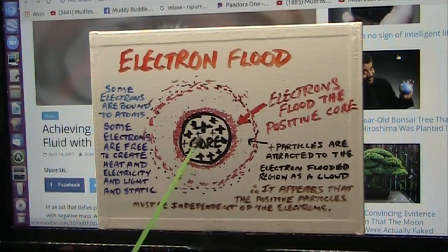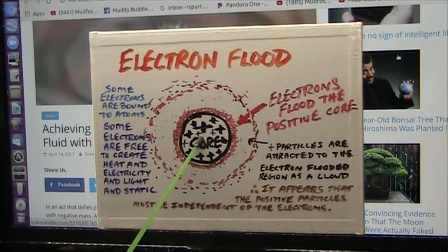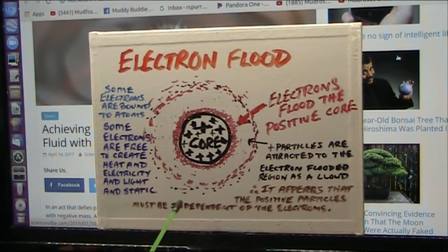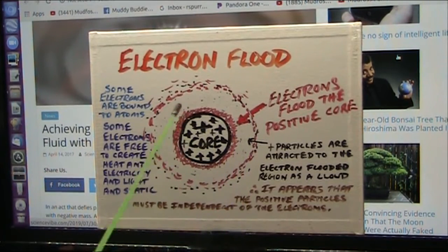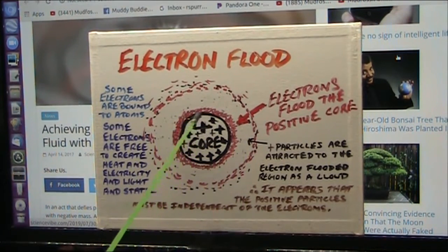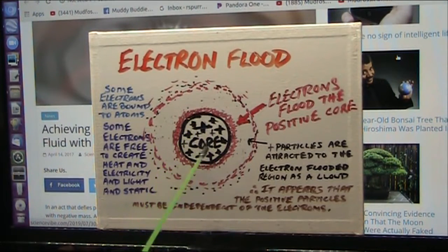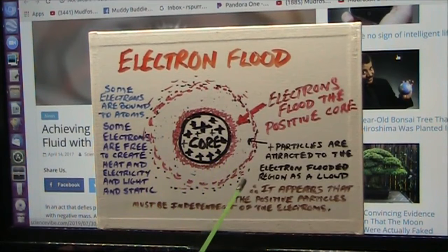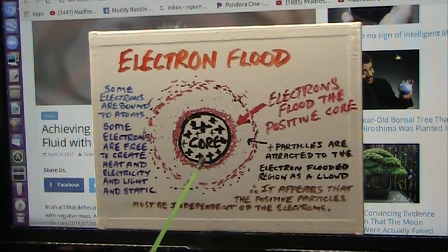And there's 1,836 particles in every proton, half positive and half negative. And every single neutron has one additional electron. So it's 1,837. The electrons flood the core. I don't know if it's a snowball core or it's a solid mass like that of positive flooded with electrons. I can't tell, to be honest with you. But I can see that there is the flood.